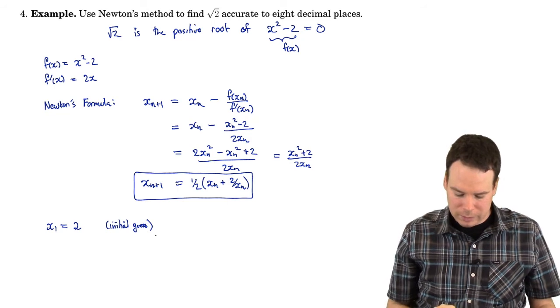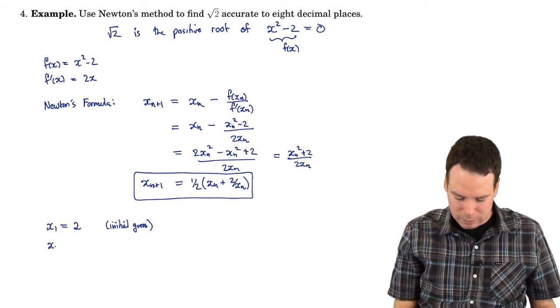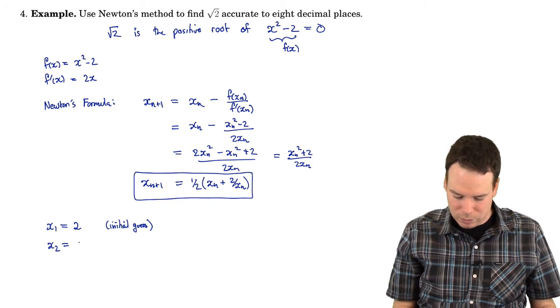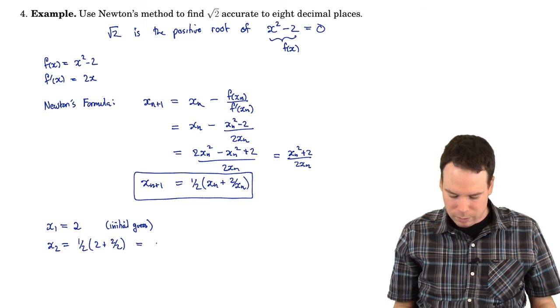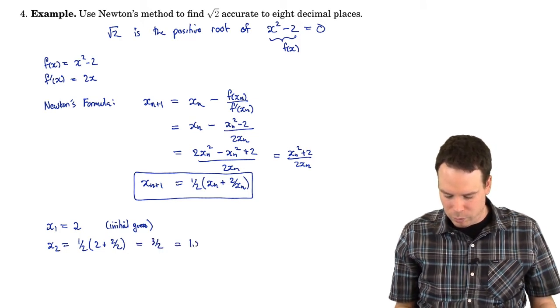So we've got our initial guess. Now we just pop it in to get the next guess, or the next approximation. So this becomes 1 half of 2 plus 2 over 2, or that's going to be 3 halves, or 1.5.